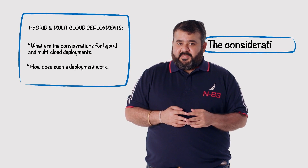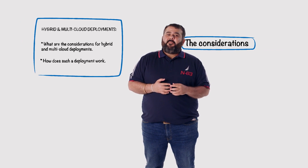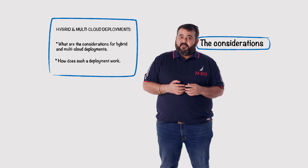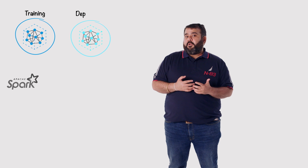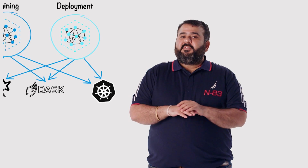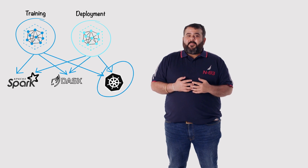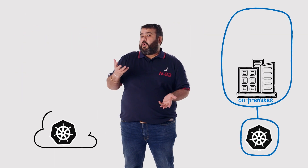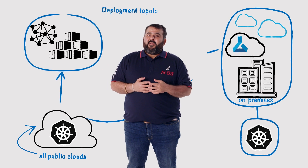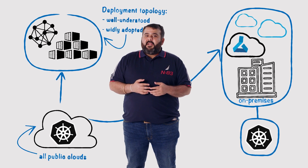First, let's understand the considerations. When we think about deployments that span hybrid environments, we have to make some important choices about our solution architecture, especially around compute options and deployment topologies. Anything you choose needs to be available across your target environments. One such compute option is Kubernetes. It is available to be deployed on-premises and as a service on all public clouds, and it brings a well-understood and widely adopted deployment topology with containers. Machine learning has adopted the container topology to package models and their dependencies so that these can be run anywhere.